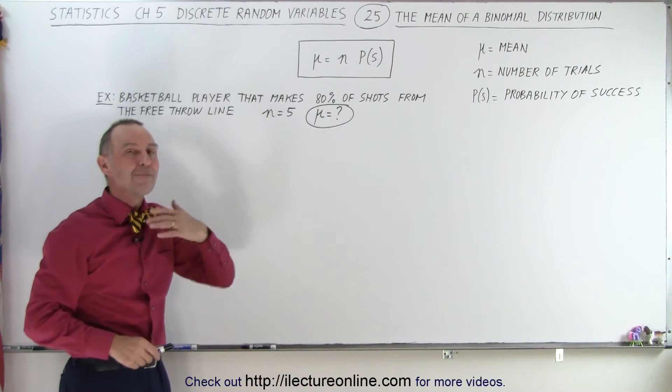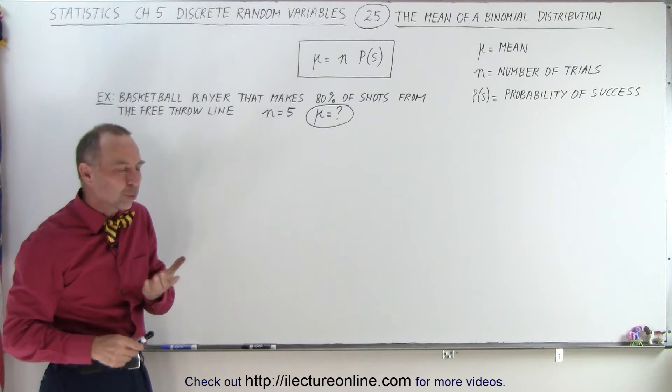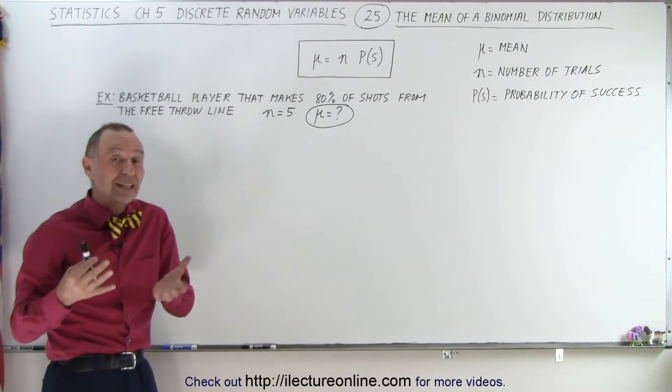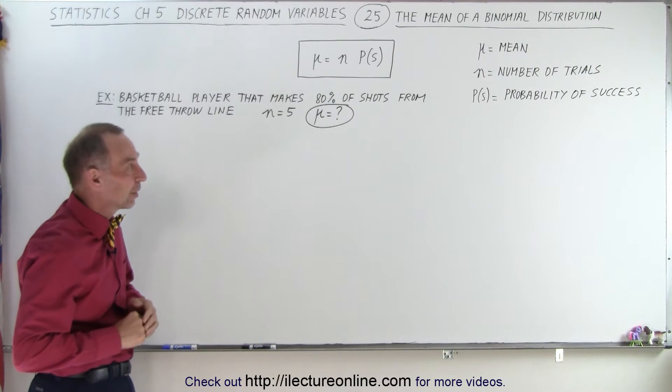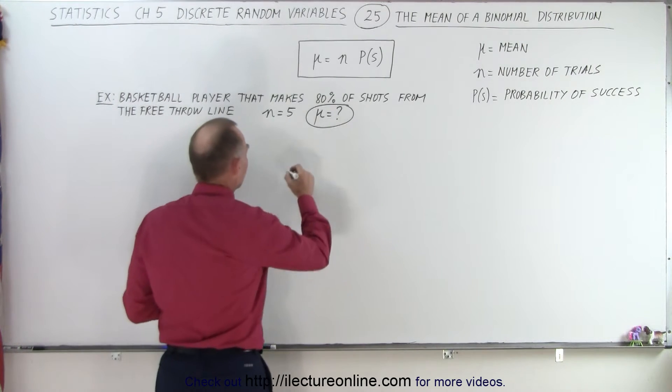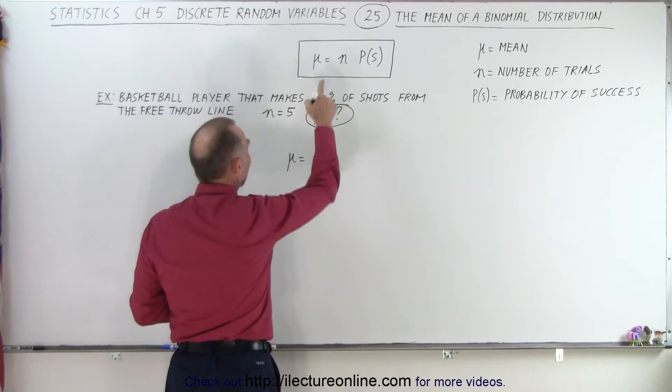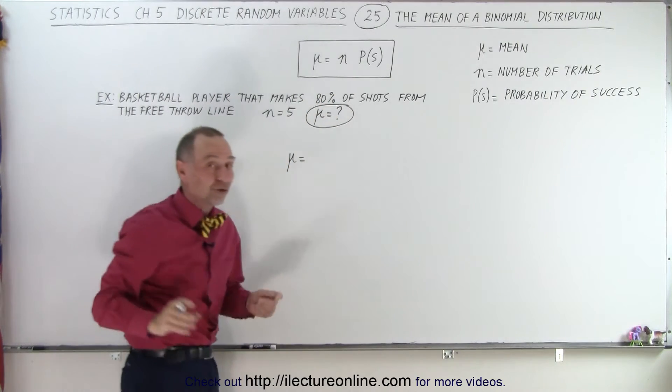So what is the mean? What is the average number of shots he will make based upon that probability of making the shots? The mean is equal to n, where n represents the number of trials.